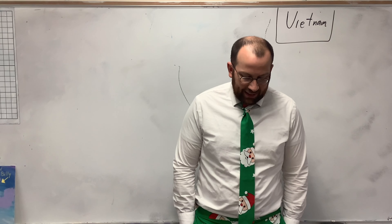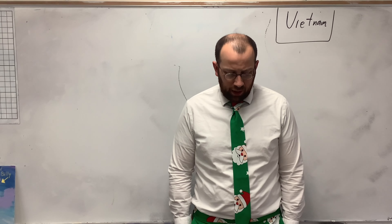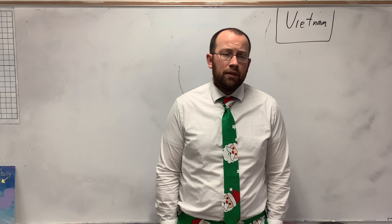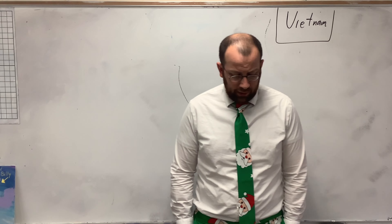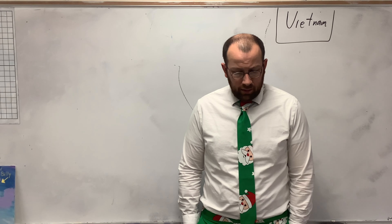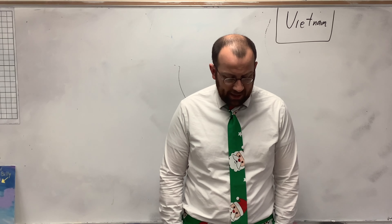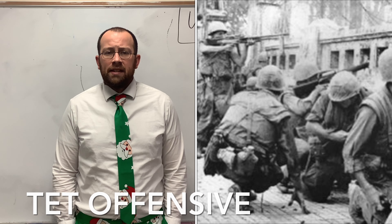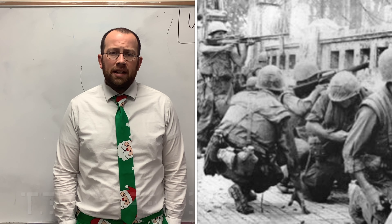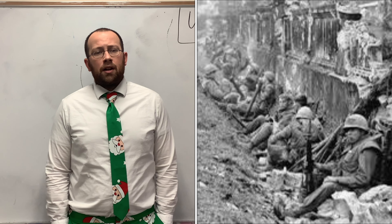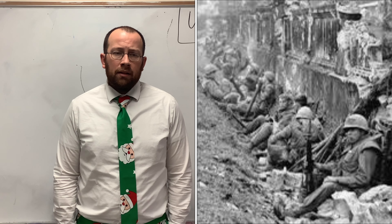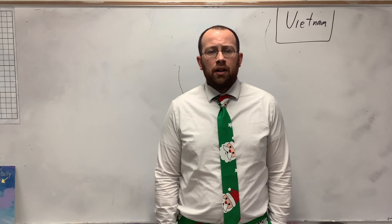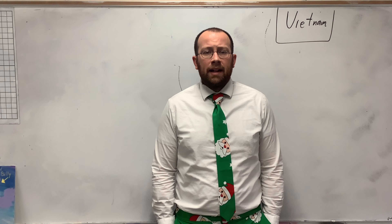That was the Gulf of Tonkin incident, and Congress put into effect the Gulf of Tonkin Resolution, which gave authority to the president to take all necessary measures to repel any attack against the forces of the United States and to prevent further aggression. In January 1968, the North Vietnamese and the Viet Cong launched the Tet Offensive, attacking major cities in South Vietnam. Their attacks were repelled, but not before the world saw it, and this is when American citizens started wanting out of the war.